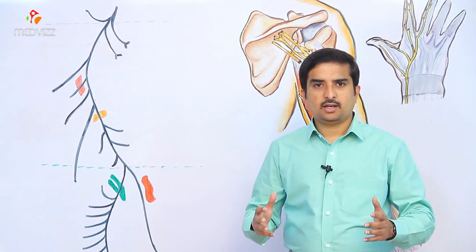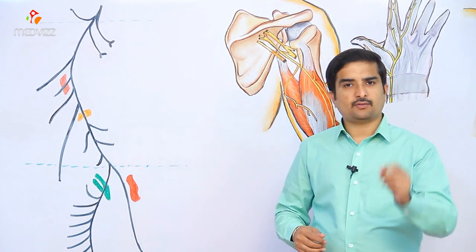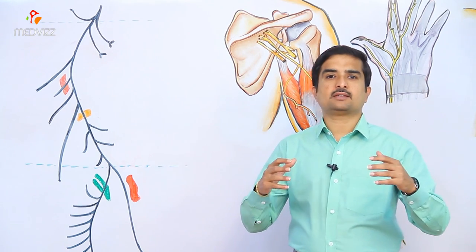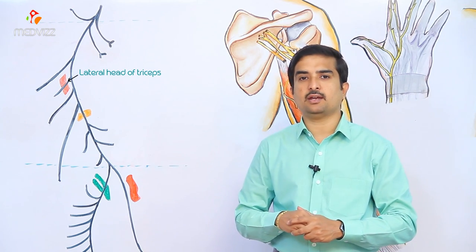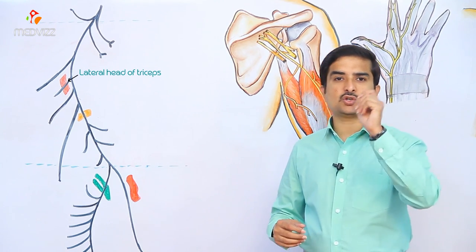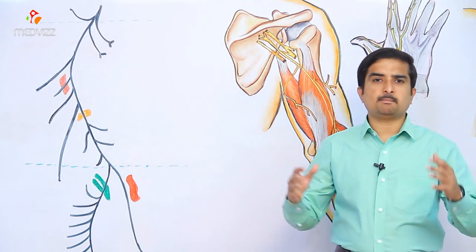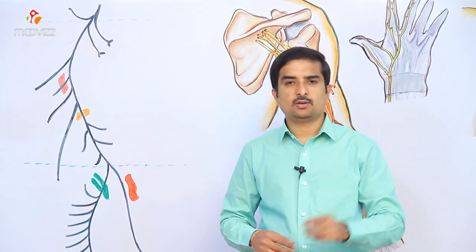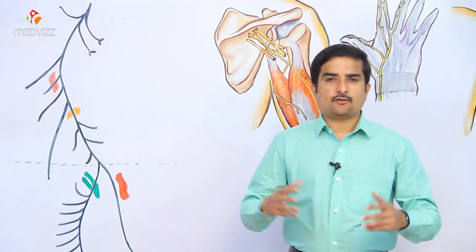After exiting via the triangular interval, the nerve supplies branches to the long and medial heads of the triceps brachii. As it descends, the radial nerve wraps around the humerus laterally and supplies a branch to the lateral head of the triceps brachii. During much of its course within the upper arm it is accompanied by the deep branch of the brachial artery, which is the profunda brachii artery.